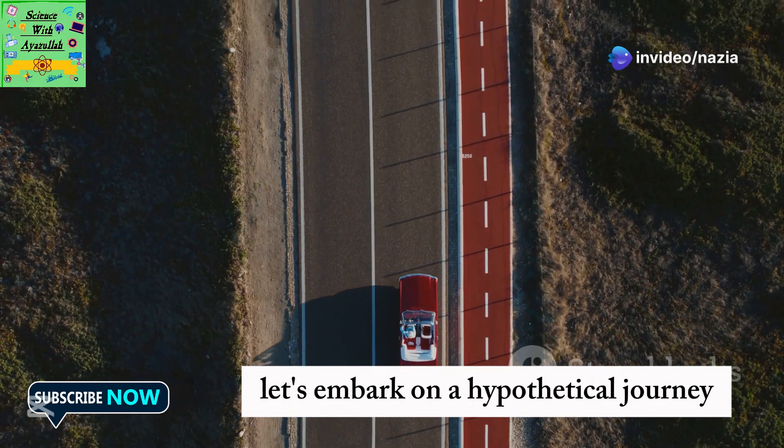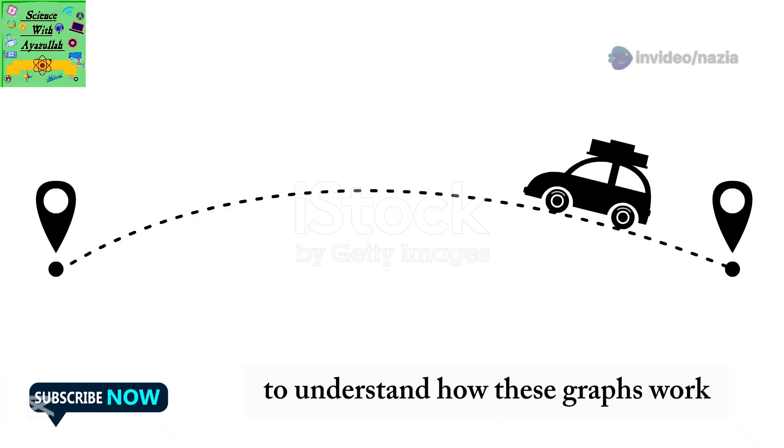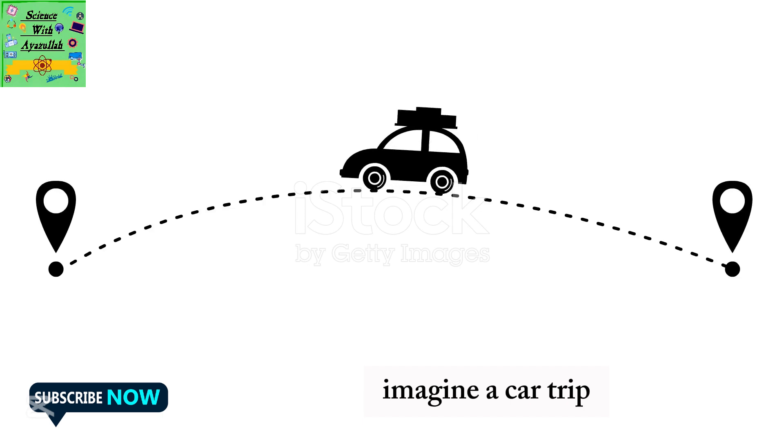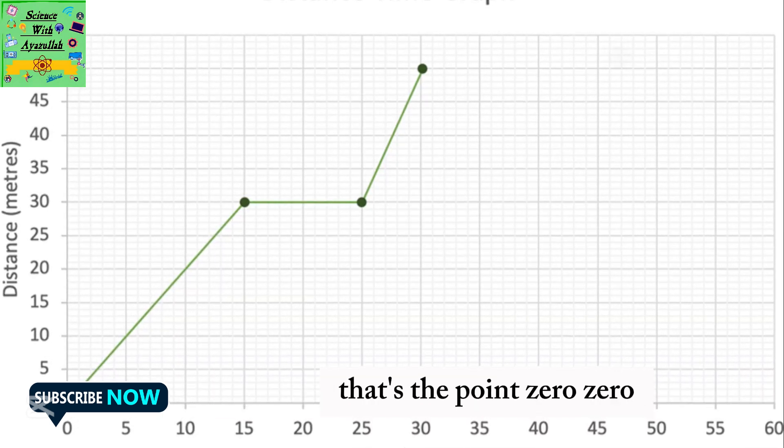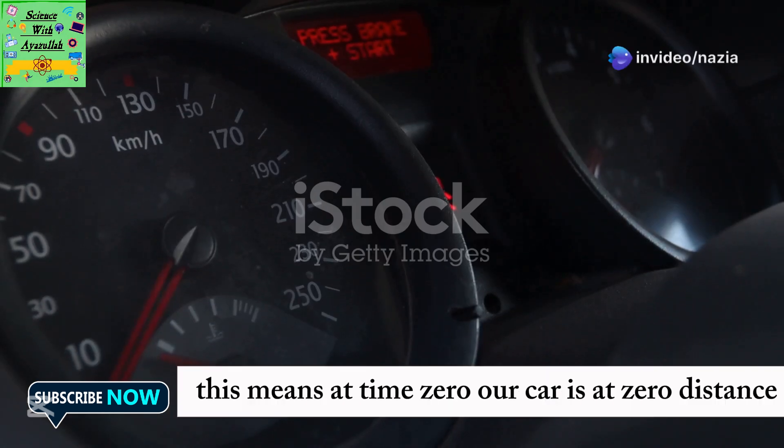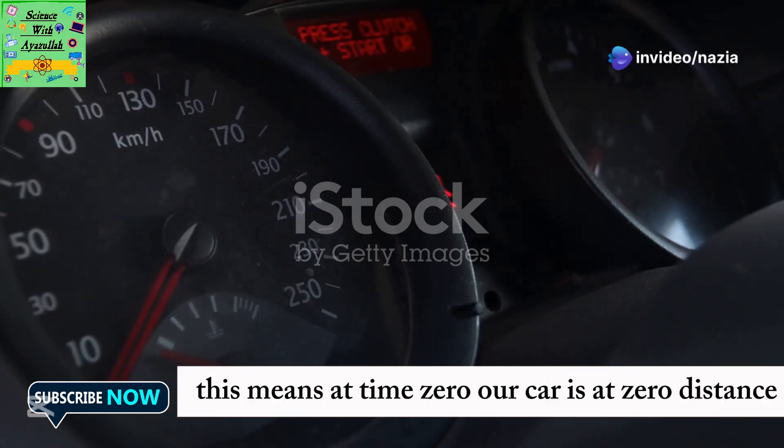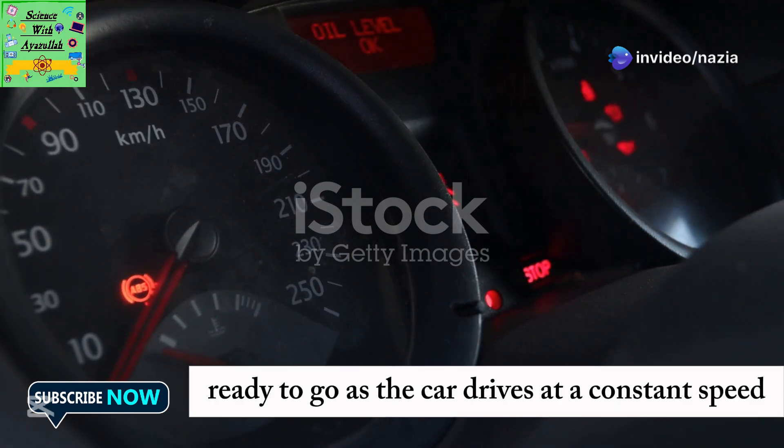Let's embark on a hypothetical journey to understand how these graphs work. Imagine a car trip. Our distance time graph starts at the origin. That's the point zero, zero. This means at time zero, our car is at zero distance. It's at the starting line, ready to go.